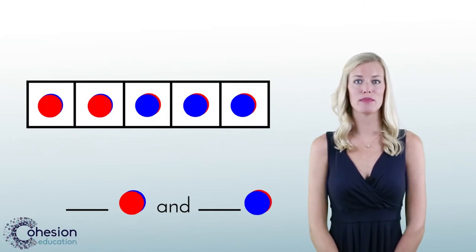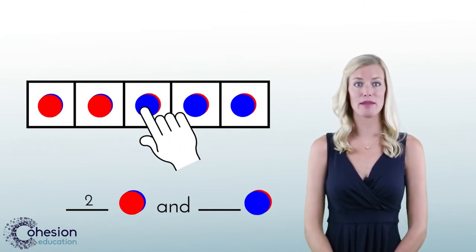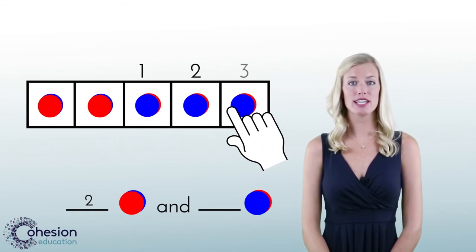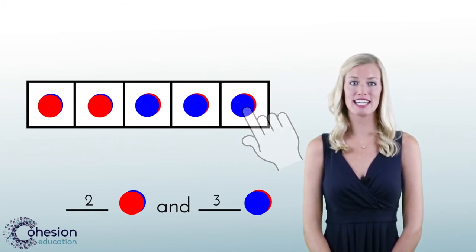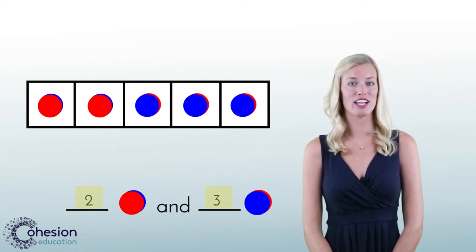To keep students from miscounting the counters, record them as you count and point to them in the five frame as shown here. Using our previous example of two red counters and three blue counters, students can record the number of each color counter here.